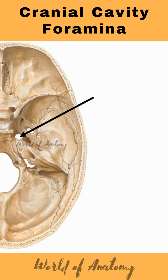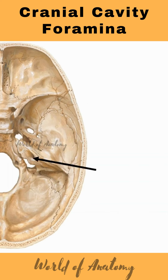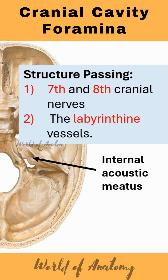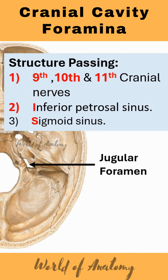Foramen lacerum — structures passing are the meningeal branch of the ascending pharyngeal artery and emissary vein. Internal acoustic meatus — structures passing are the 7th and 8th cranial nerves and labyrinthine vessels. Jugular foramen — structures passing are the 9th, 10th, and 11th cranial nerves, inferior petrosal sinus, and sigmoid sinus.